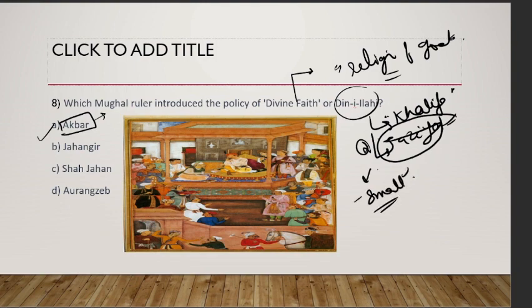Din-i-Ilahi was basically a combination of teachings from different religious scriptures. Wherever there were conflicts between teachings, Akbar interpreted them himself — that is why he declared himself the spiritual leader, or Khalifa, of the people.